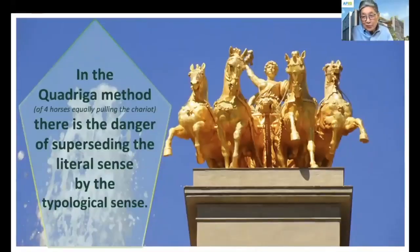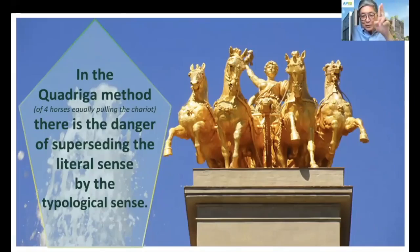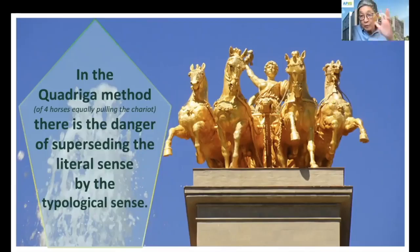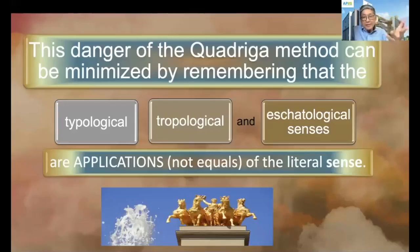What's wrong with treating the Quadriga as four equal horses is that it's never true. One horse is always the lead horse — the literal sense. If you use the Quadriga method, the literal sense must always come first, and your typological interpretation cannot stray too far from it. It's not four equal horses running together; the literal sense is number one, then you do the rest.